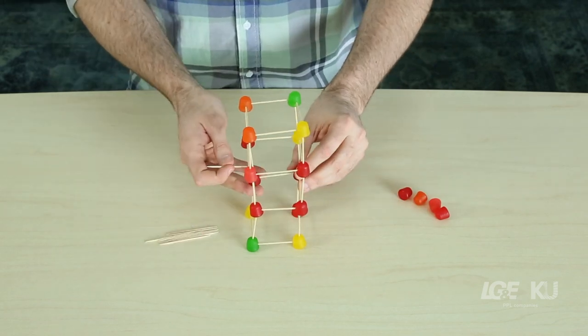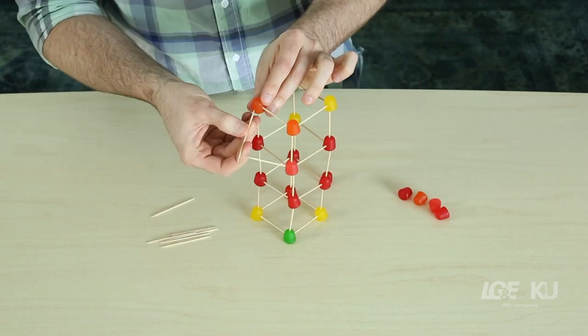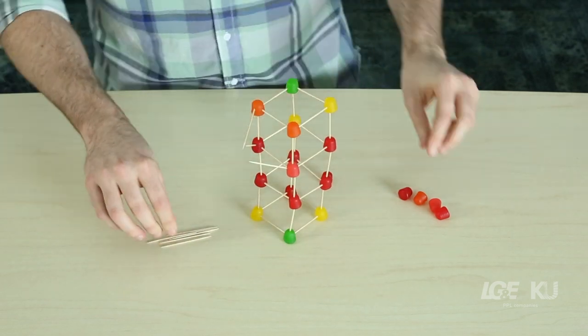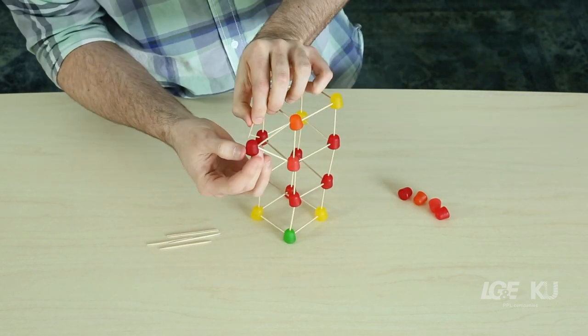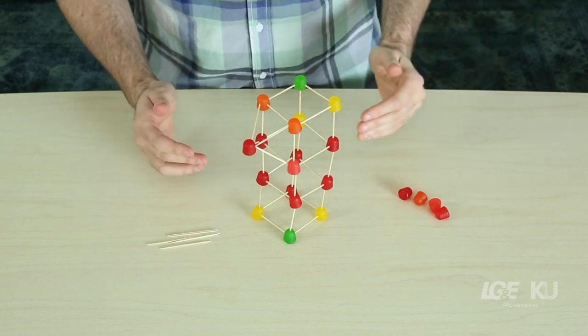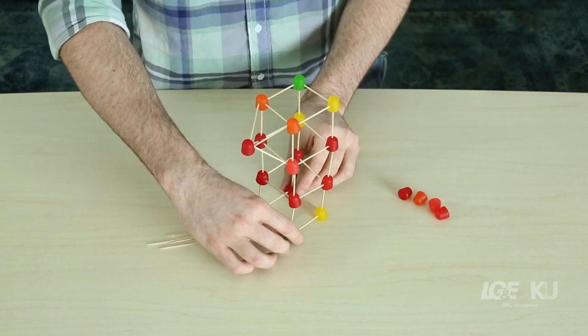Build an arm by bringing four toothpicks to a point, like this. Build the other arm and the top the same way.